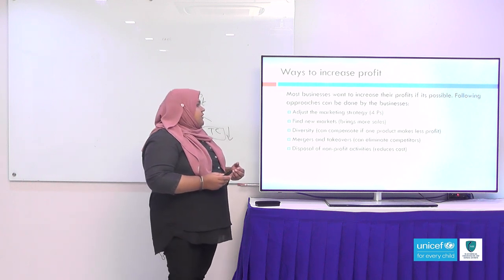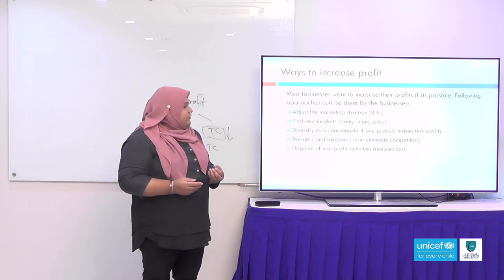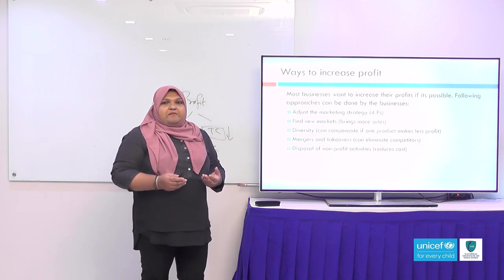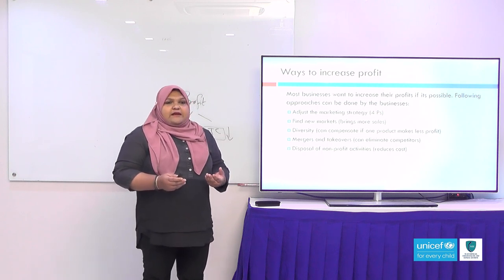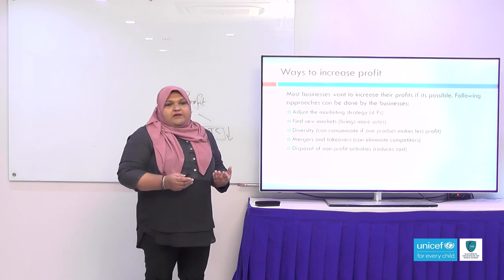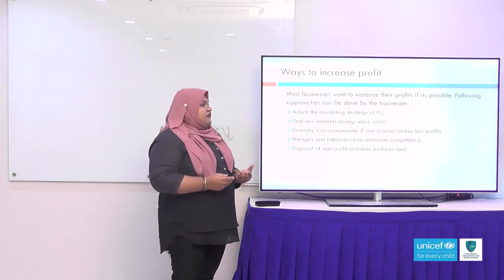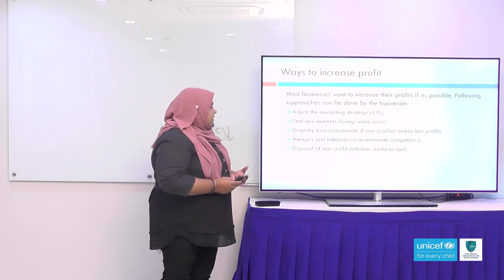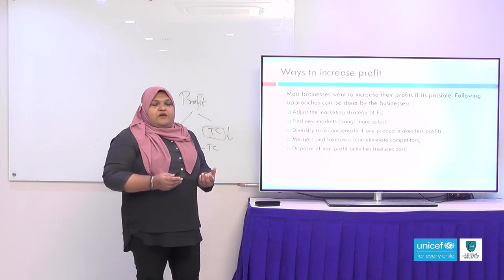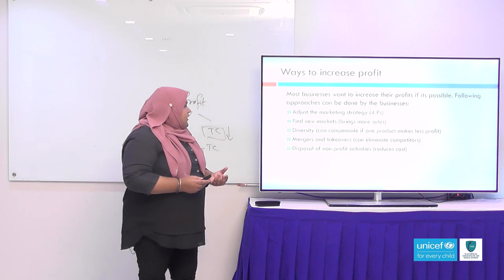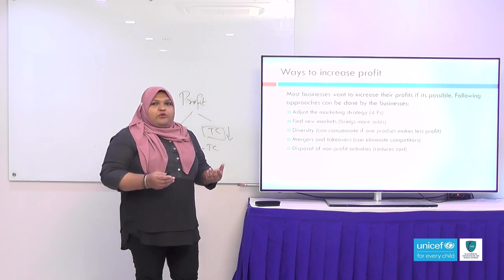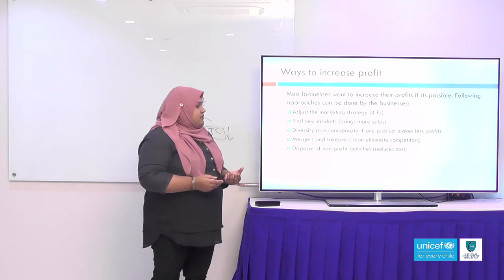Another thing a company can do is find new markets, which will bring in more sales and more revenue. Third, they can diversify — this is very important because if you depend on one product and it fails, your only source of income goes down. But if a company has more than one product, it can compensate even if one makes less profit. Companies can also eliminate competitors by merging or taking over, becoming one company. Finally, disposal of non-profit activities — identifying departments not making profit and cutting them down to reduce costs.